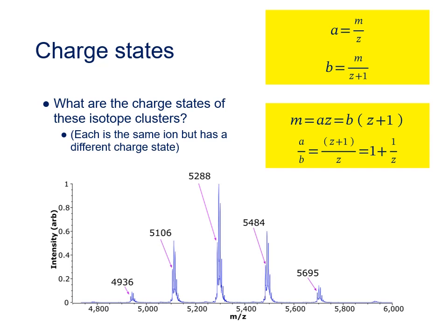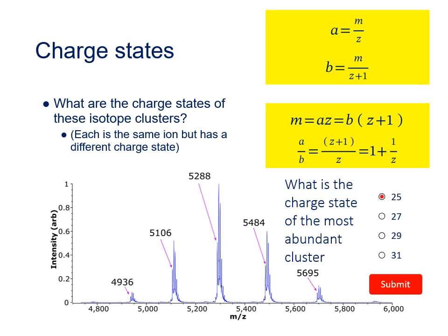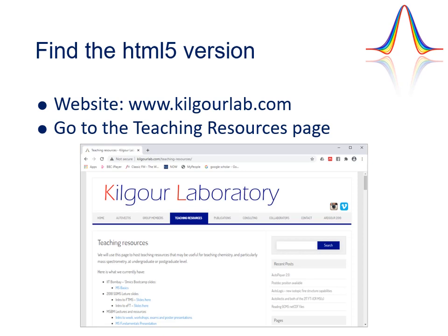So, if I give you this set of master charge values, can you calculate the charge state for the ion in the most abundant cluster in the distribution? I've also made an HTML5 version of this video. The benefit of watching the presentation in HTML5 mode is that you get to go through it at your own pace and answer questions and problems as you go along to help you understand the material. To find the HTML5 versions, go to the Kilgower Lab website at www.kilgowerlab.com and then go to the Teaching Resources page. On there, you'll find a whole variety of resources to help you learn about mass spectrometry. I hope you enjoy them.